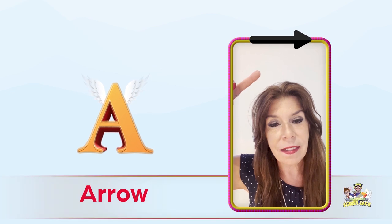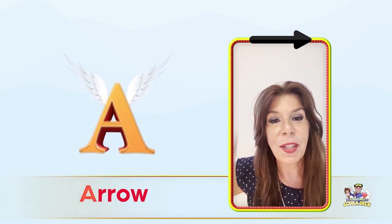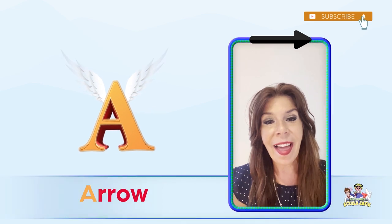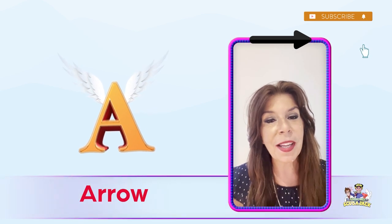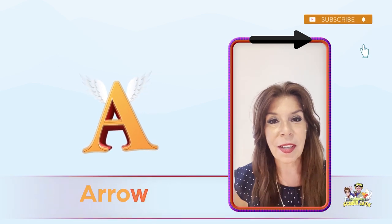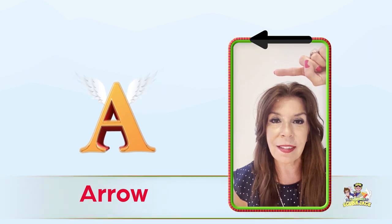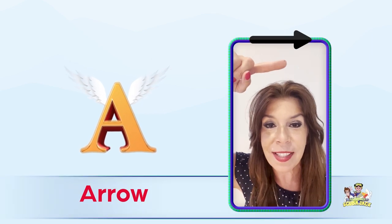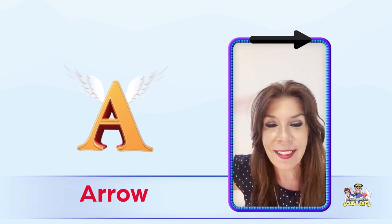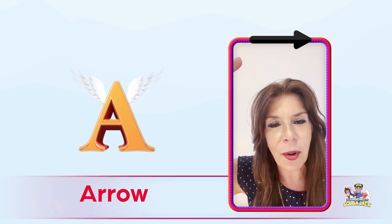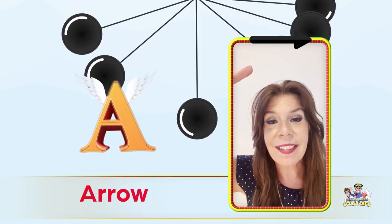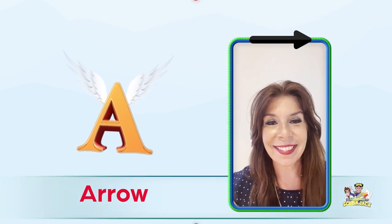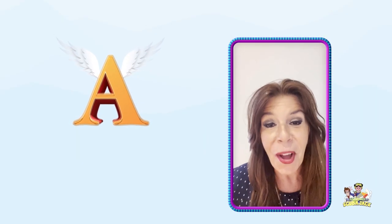The next word is arrow. Do you see the arrow above my head? Can you say arrow? Let's do it again — arrow. One more time — arrow. Do you see the arrows pointing that way? Now see the arrows pointing up, now pointing that way. What color is the arrow? It's black. Can you say black? Very good!